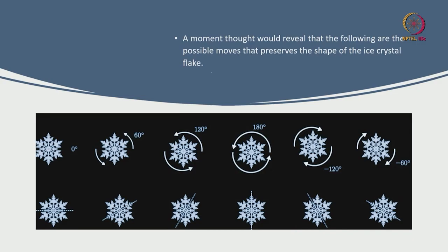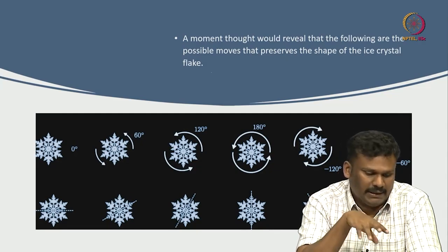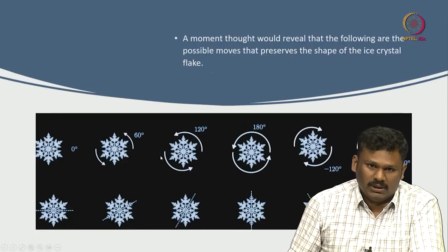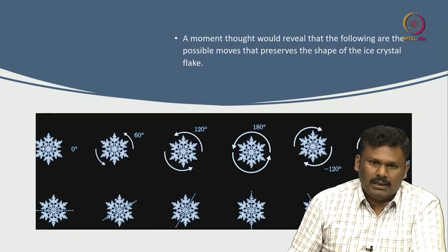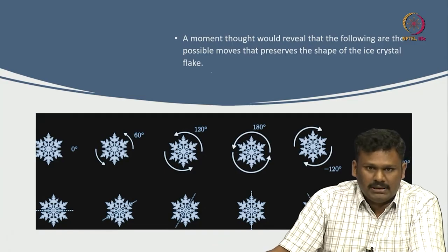What we are ultimately interested in is a group that is actually acting on this thing. Mathematically speaking, I am talking about group action. There is a group behind this picture — it is the dihedral group D6, which has order 12. That group is actually acting on this ice crystal. What is the group and what is the action — those are two things we need to understand. But before getting into the group definition, let us understand what abstraction means.